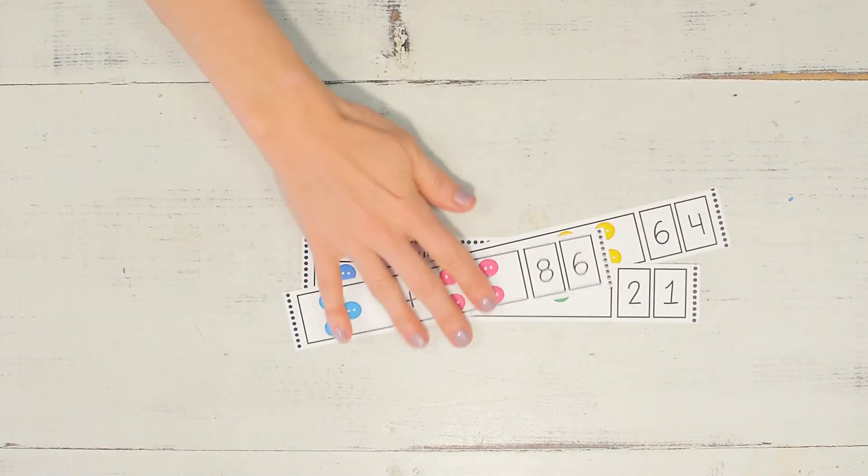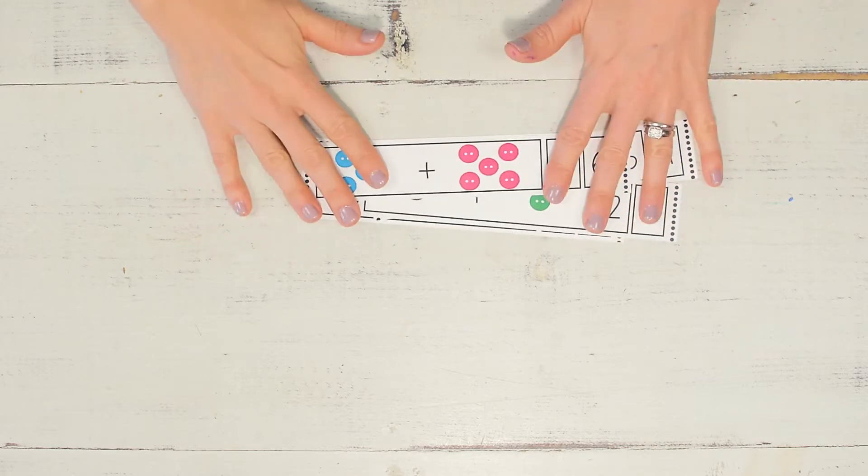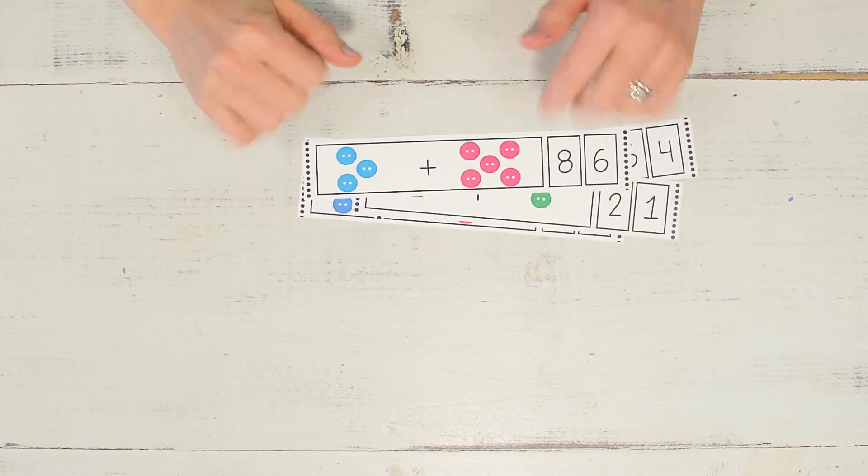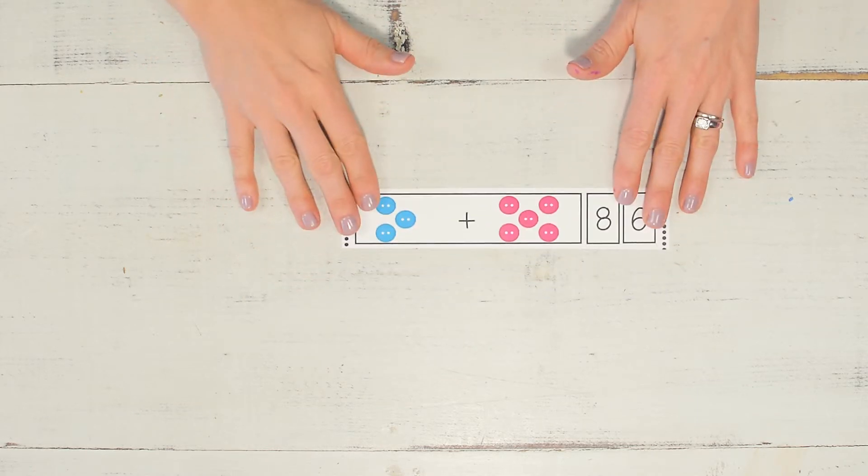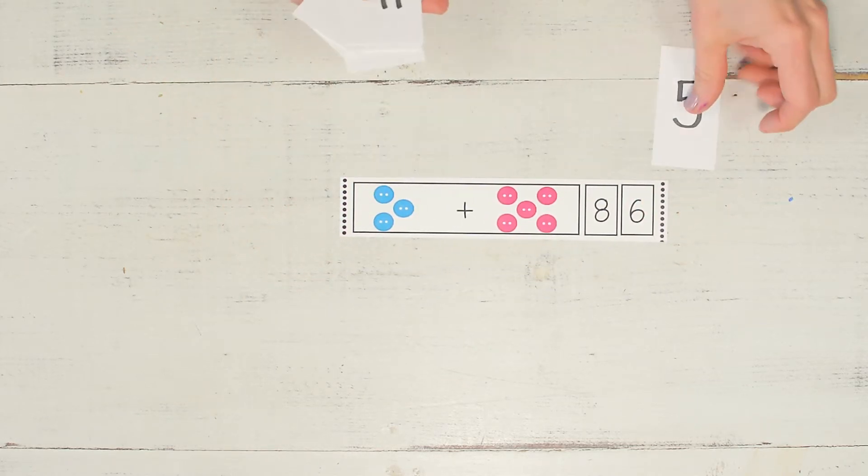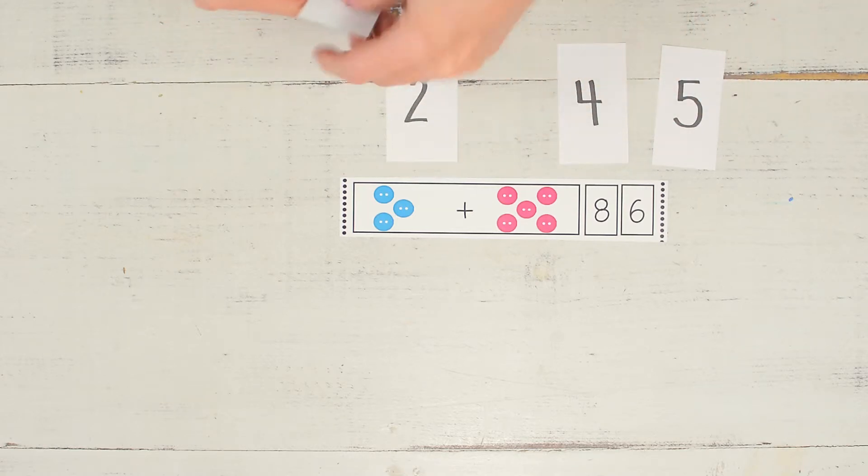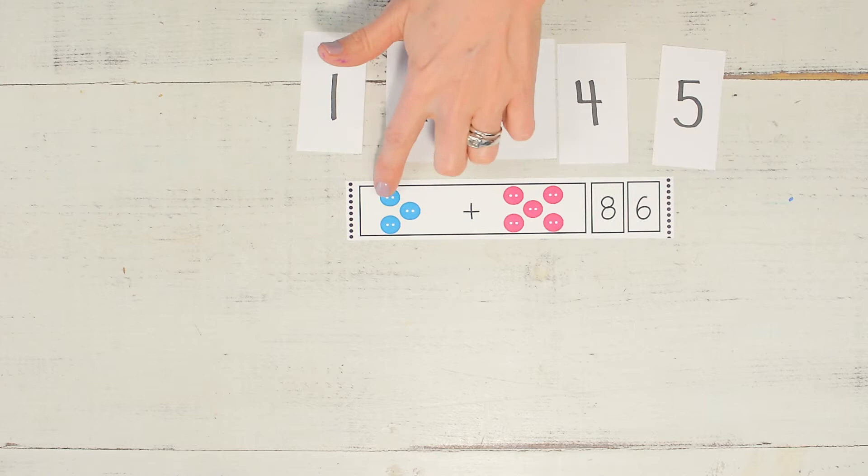Now this one's a little bit more challenging, so I like to have my activity all cut up like this, and I am going to put one of the cards in front of me, but this time I have numbers that I am going to use to match to the buttons.